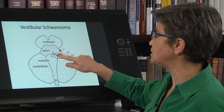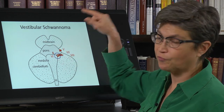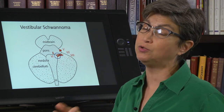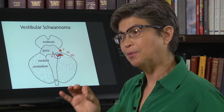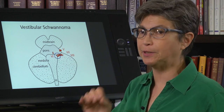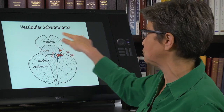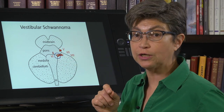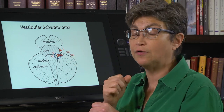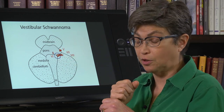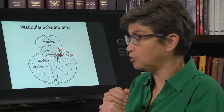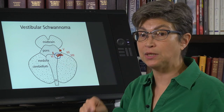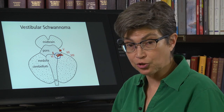The most typical place where a vestibular schwannoma — formerly called an acoustic neuroma but properly called a vestibular schwannoma — starts is on the vestibular root of the eighth cranial nerve, so the first symptoms tend to be vestibular in nature.